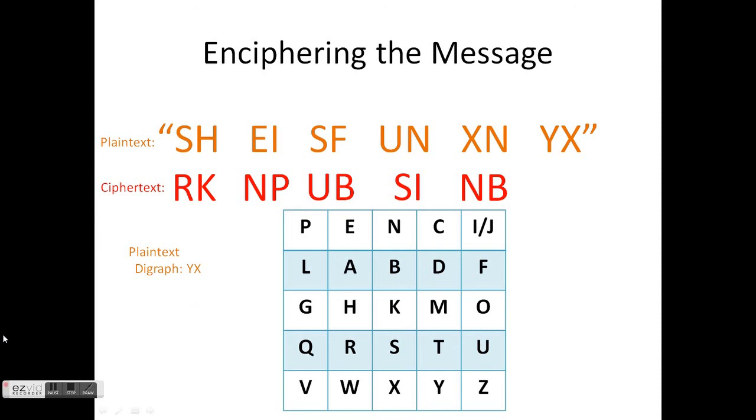So finally, we have the digraph YX. Highlight the Y, highlight the X. They're in the same row, so we're going to move Y over to Z. And we're going to move X to Y. So YX will become ZY.